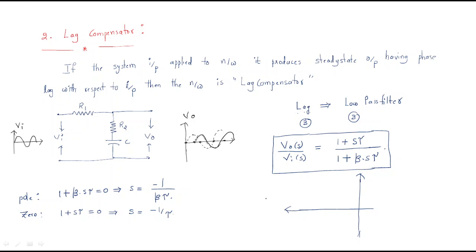Since beta is greater than 1, the value 1/βτ is less than 1/τ, so the pole is nearer to the imaginary axis. In the lead compensator, the zero is nearer to the imaginary axis; in the lag compensator, the pole is nearer. Both are close to the imaginary axis — this is the pole-zero configuration.